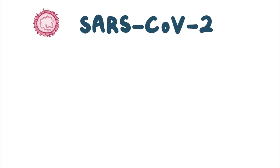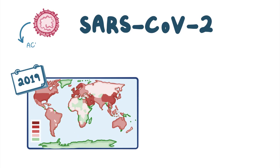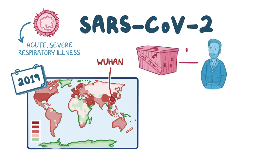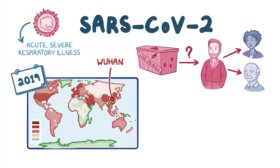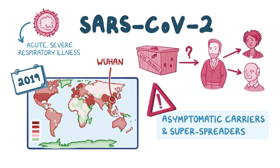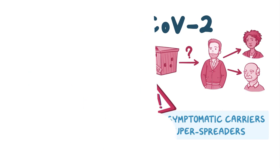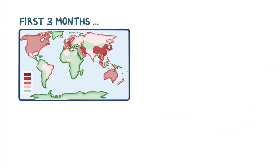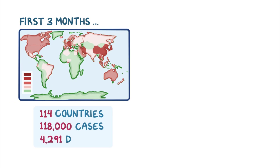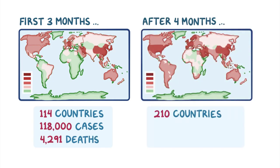SARS-CoV-2 caused the COVID-19 outbreak beginning in 2019. The acute, and sometimes severe, respiratory illness was first reported in Wuhan, China. Though its likely transmission happened at live animal markets, the natural reservoir is still being worked out. Person-to-person transmission has led to its rapid spread. The role of asymptomatic carriers, who spread the disease even though they have no symptoms, and super-spreaders, who transmit the disease to a higher number of people than most, is thought to be significant. Within the first 3 months, 114 countries reported 118,000 cases and 4,291 deaths. After 4 months, 210 countries reported over 3 million cases and over 200,000 deaths.